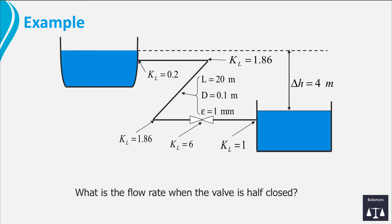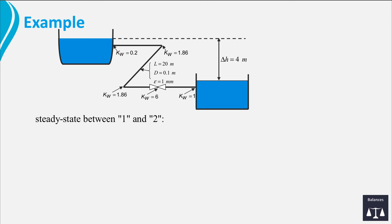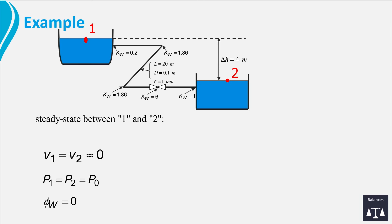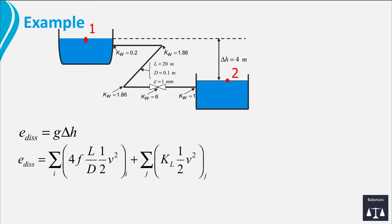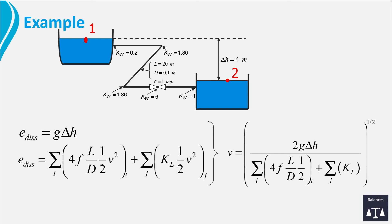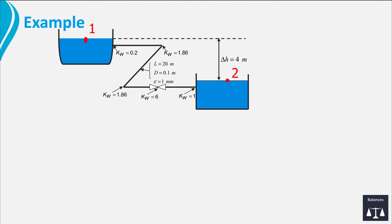As you can see, the highest value of K_L is the half-closed valve. From the steady-state mechanical energy balance between point 1 and point 2, you can derive the energy dissipation of this pipeline system. Realize that the velocity in point 1 and in point 2 are both very small and that the local pressures are both atmospheric. Further, no work is performed by a pump. Combining the total energy dissipation equation gives an expression for the velocity. The value of the average velocity can be obtained by iteration because the friction factor F also depends on the velocity.